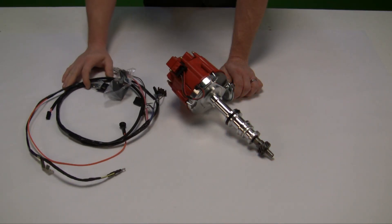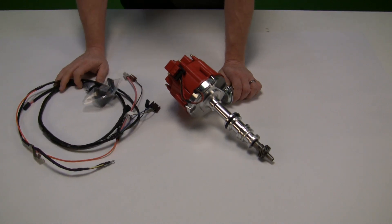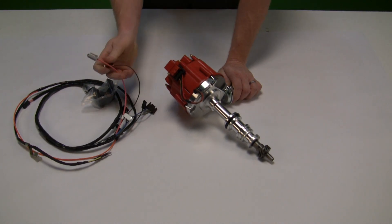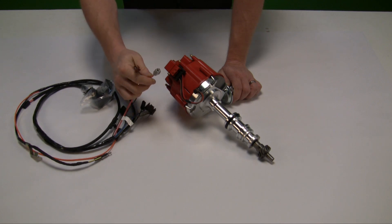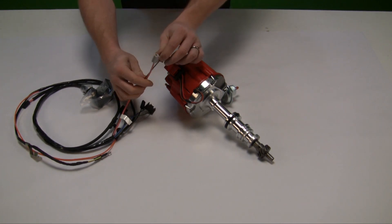This is an example of one of our factory fit harnesses that's been modified with the HEI connections. The pink is the ignition lead, the brown is for tach.